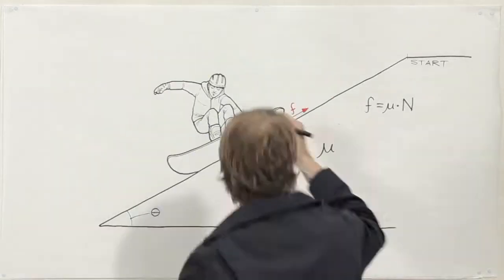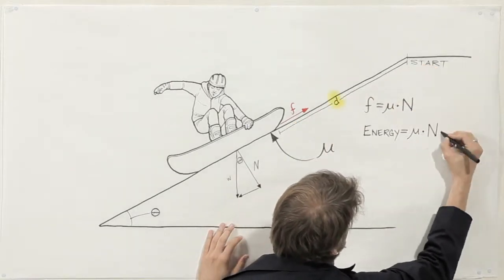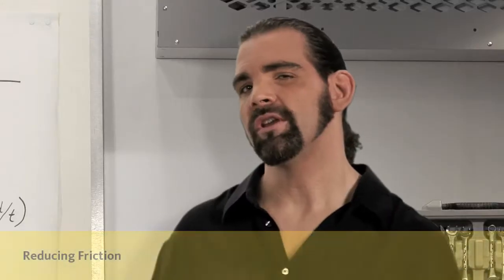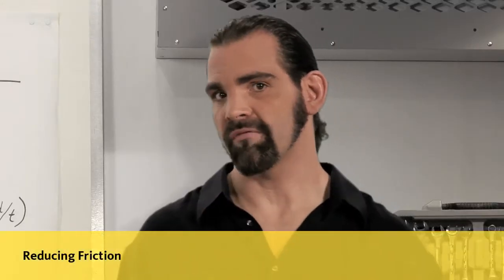To find the energy used to overcome friction, multiply friction force by distance. To find out power loss, multiply friction force times velocity. Once we know where friction comes from, we can reduce it.